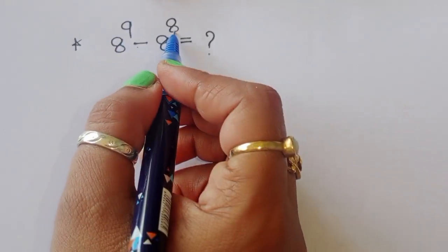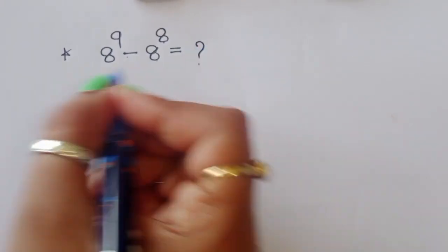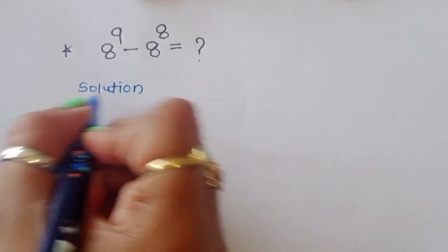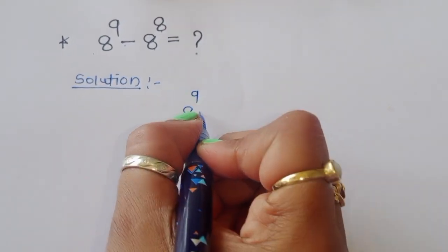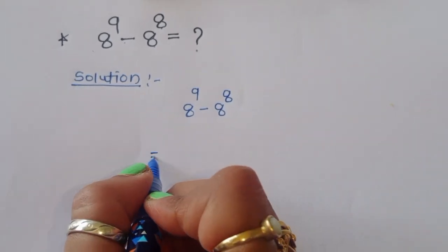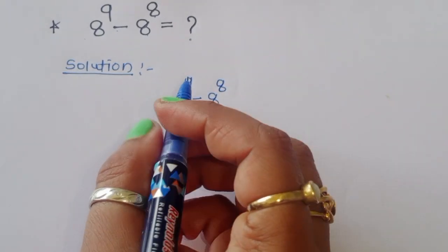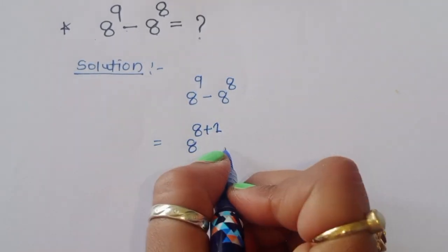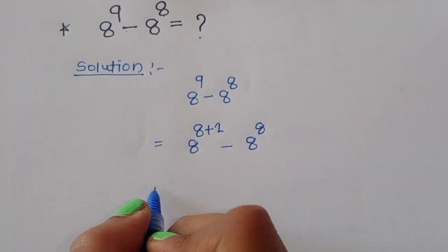We have to find out the value of 8 power 9 minus 8 power 8. Let's see the solution. 8 power 9 minus 8 power 8 is equal to — now 8 power 9 we can write as 8 power 8 plus 1, since 8 plus 1 is 9, minus 8 power 8.